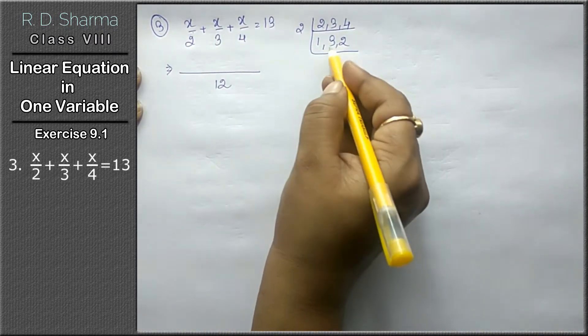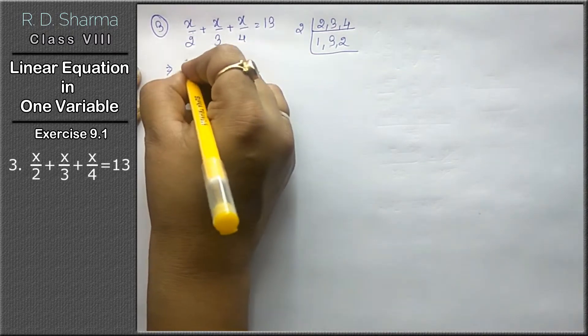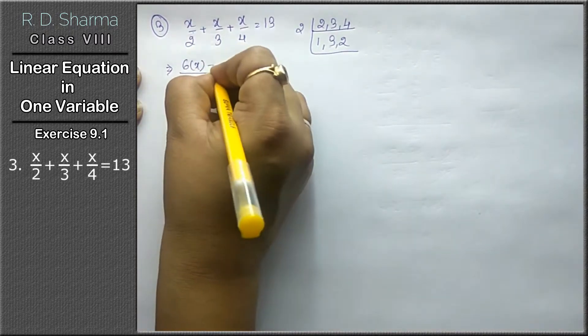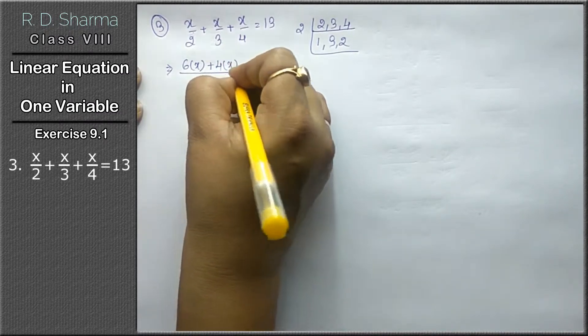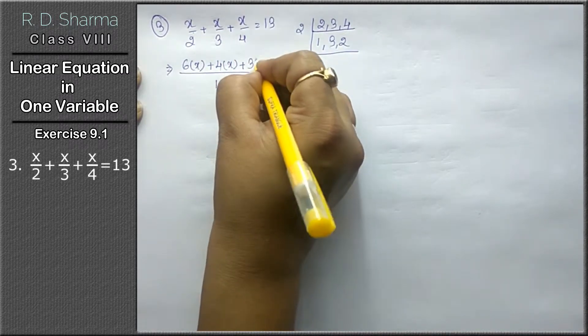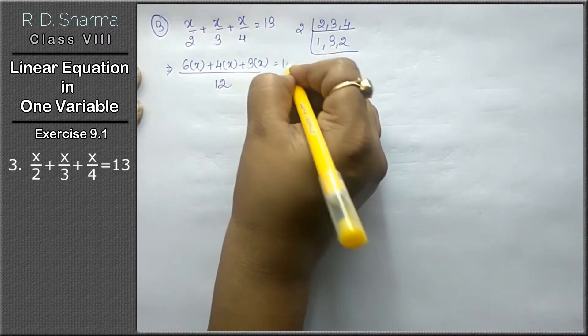So we have 6 times x, that means 12 divided by 2 is 6, times x. Plus 4 times x, 12 divided by 3 is 4, times x. Plus 3 times x, 12 divided by 4 is 3, times x, equals to 13.